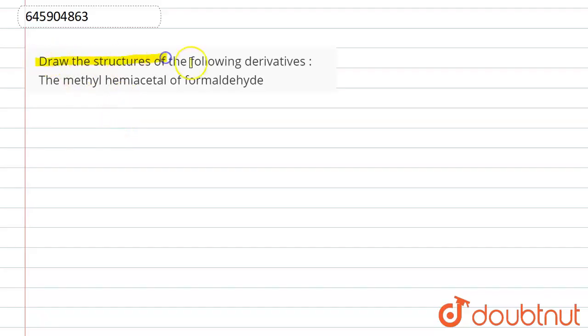Draw the structure of the following derivative: the methyl hemiacetal of formaldehyde. So basically, formaldehyde is H-C double bond O and H.